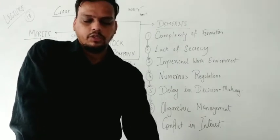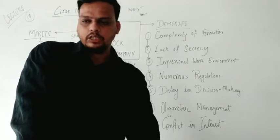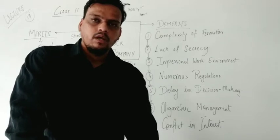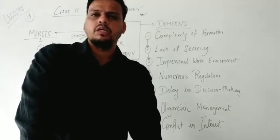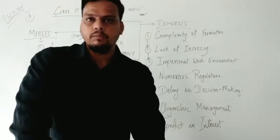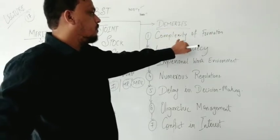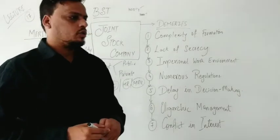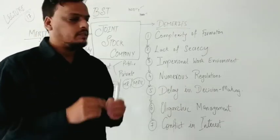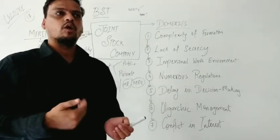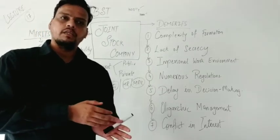Let's begin with the first demerit: complexity of formation. As you know, in a joint stock company a huge amount of documentation work is required. The company has to wait for a long period of time to start. It requires long time, effort, and following of many procedures and legal rules and regulations before you can start a joint stock company. For example, if you want to start a business today, your certificate may only be received after six months or one year. After following registration procedures for six months, you will get the incorporation certificate and the commencement certificate.